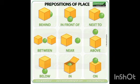The fifth one is: the ball is near the box. In the sixth picture, the ball is above the box. The seventh one is: the ball is below the box. And then: the ball is in the box. The last picture is: the ball is on the box.